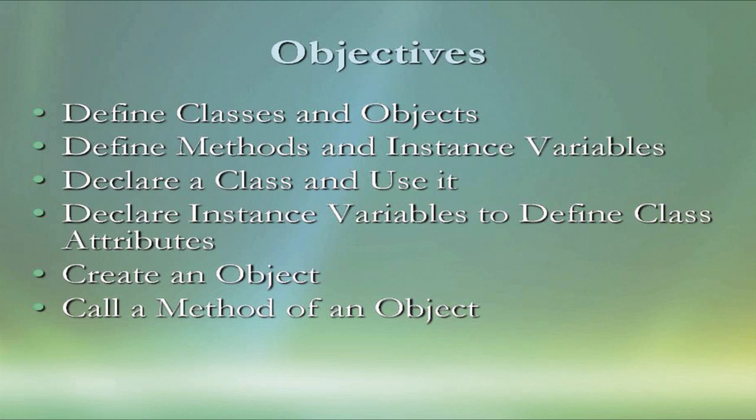How can we declare instance variables to define class attributes? How can we create an object and how can we call a method of an object? Make sure that you understand every piece of these objectives at the end of the lesson.